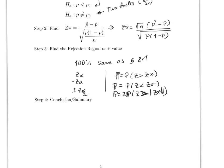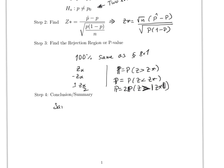And the conclusion and the summary are exactly the same as before, which is just reject H0 or fail to reject H0. All right, so let's do one example of this.